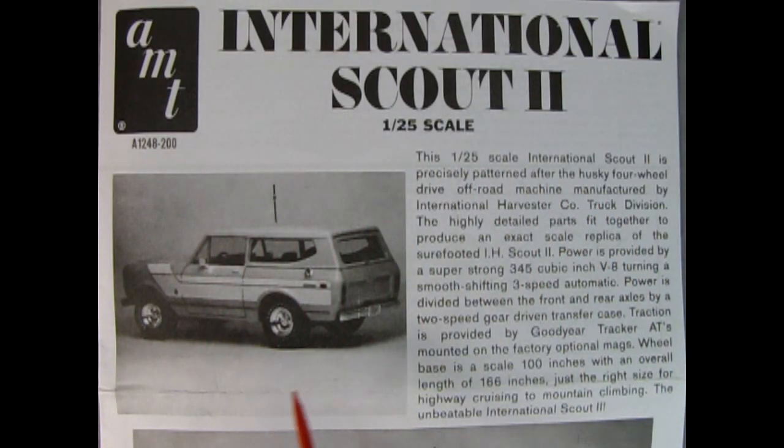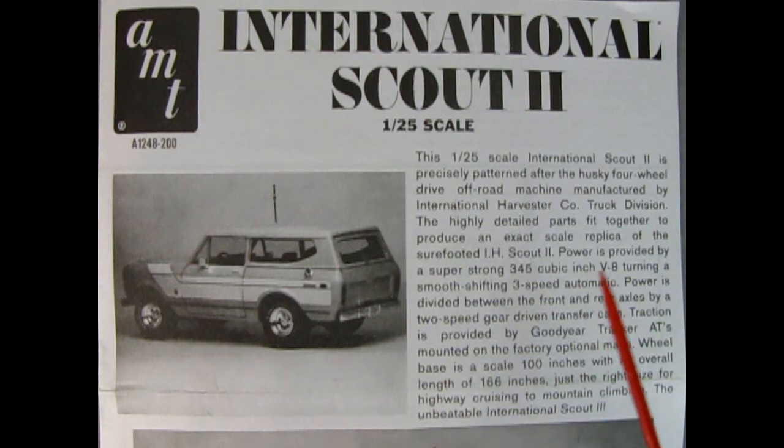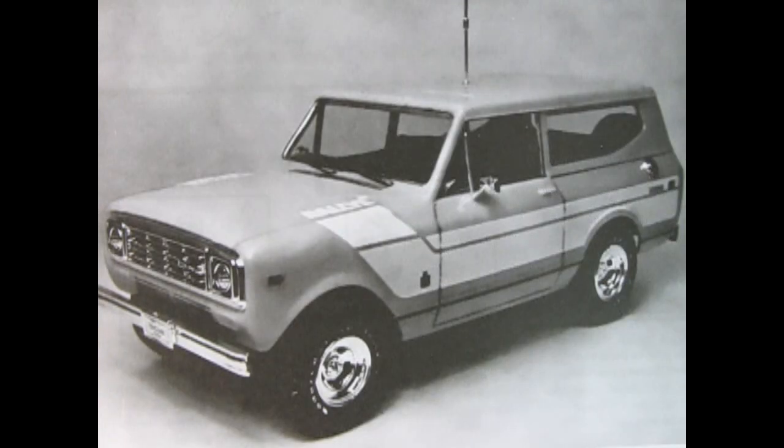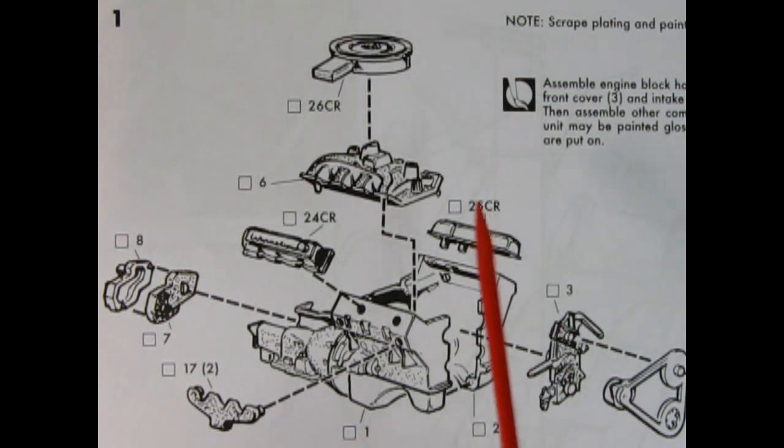Let's clear all this out of the way and see what the instructions show. As we open up our instruction sheet, we see the wonderful black and white three-quarter photographic view of the built-up model. This is the International Scout 2, a 1:25th scale from our friends at AMT. Here we have this great big write-up which I'm going to add down in the doobly-doo down below so you guys can check that out.